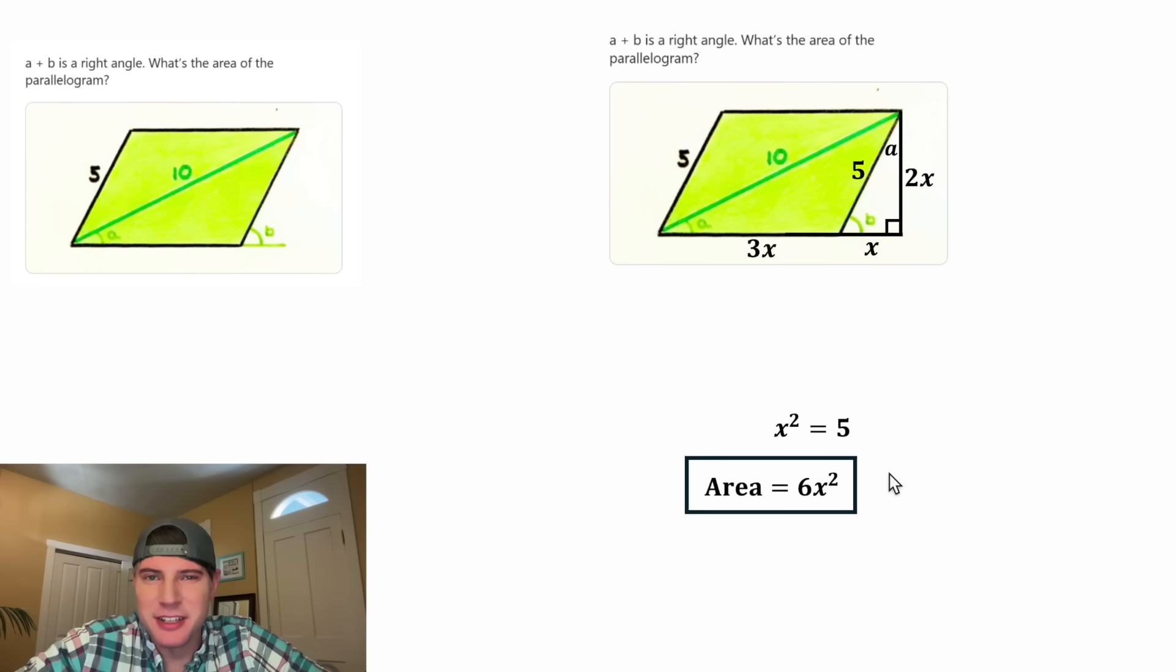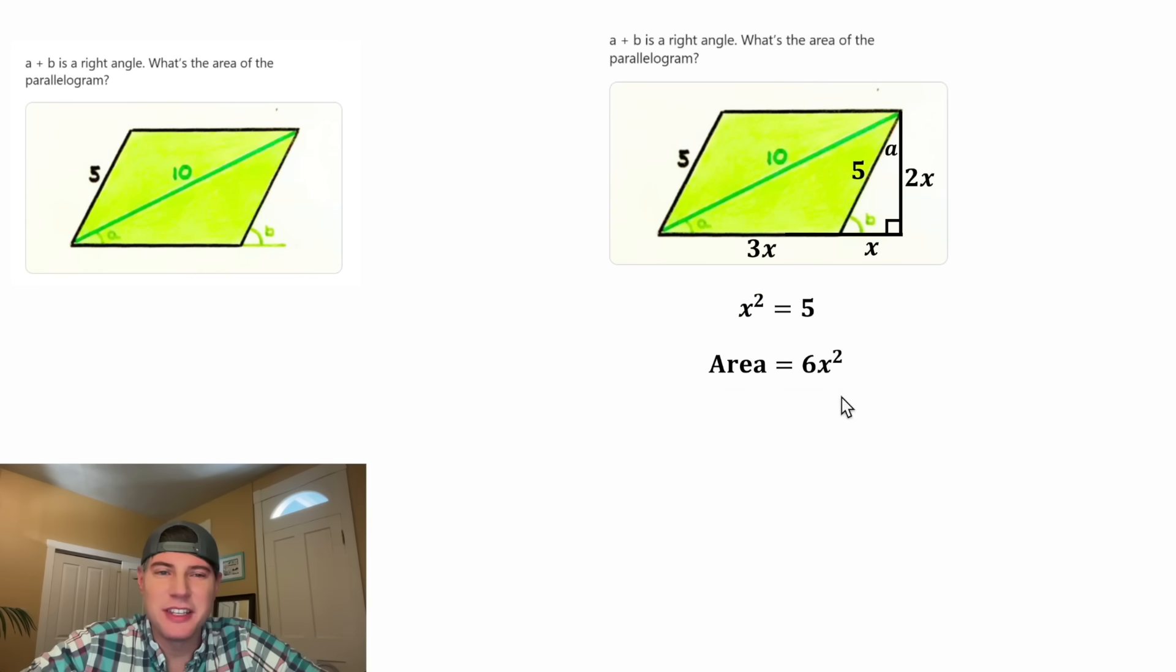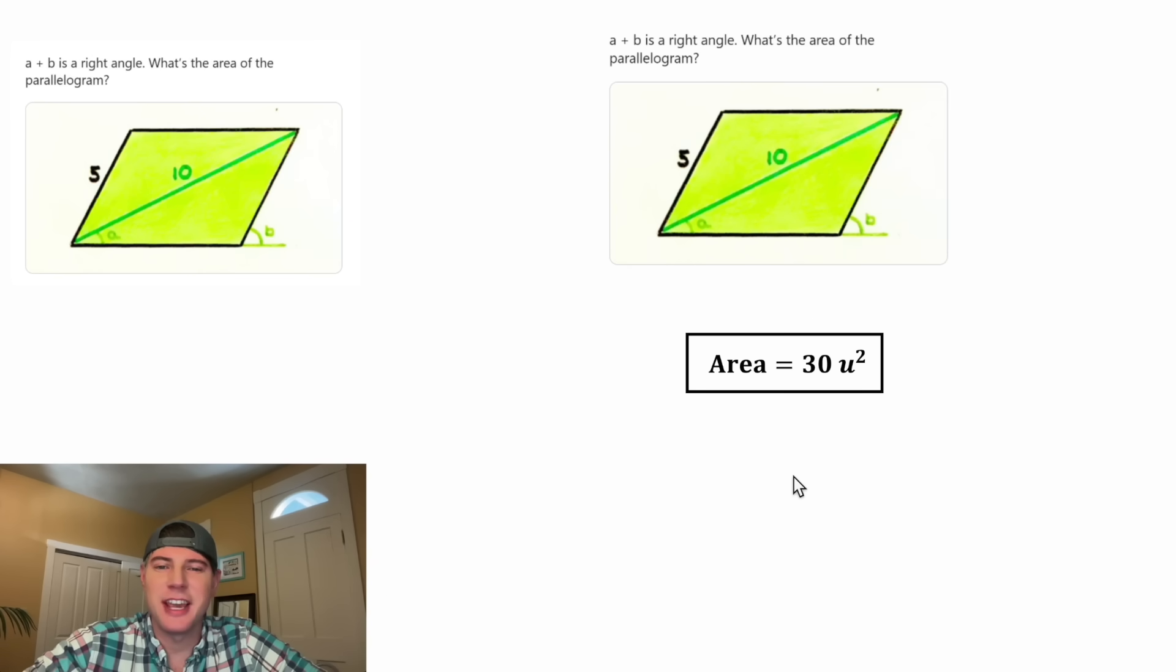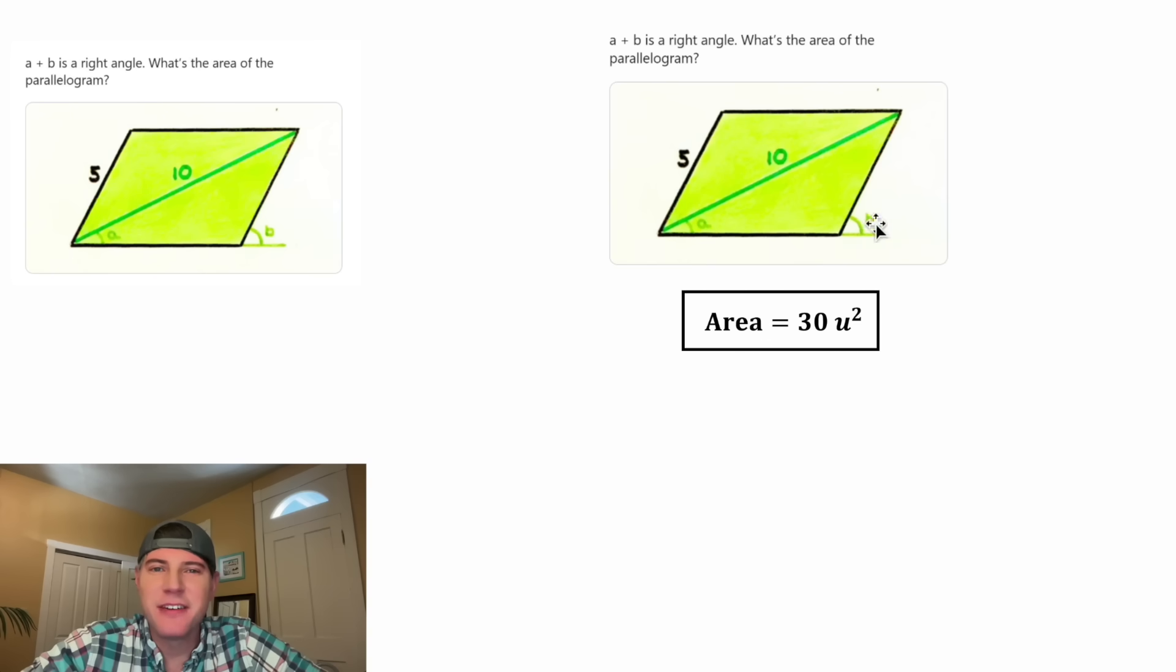And now we're ready to plug it into the area formula. In the place of this x squared, we can plug in 5. 6 times 5 is equal to 30. Let's give it a label of square units and put a box around it. This is the answer to our question. In this given diagram, the area of the parallelogram is 30 square units. How exciting.